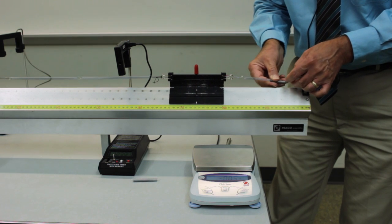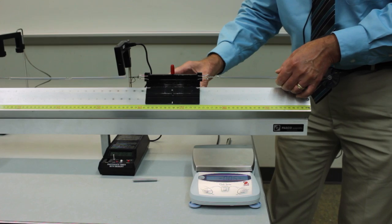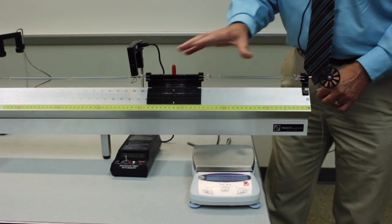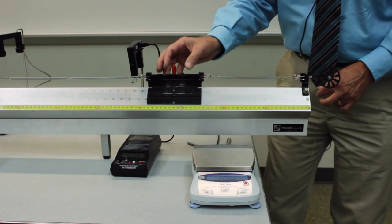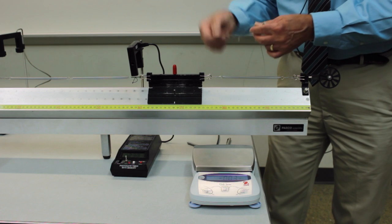And we just reattach the system. So now we've got three springs instead of four. So removing one of the springs from the system changes the force constant of the combined system. And you'll have to re-measure that.